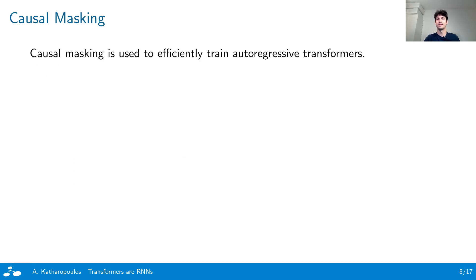Let's now see how this analysis can be extended to autoregressive transformers. Autoregressive transformers are typically implemented by masking the attention matrix, such that each element can only attend to previous elements in the sequence. Arbitrary masking is not feasible in our formulation, since the attention matrix is never explicitly computed.